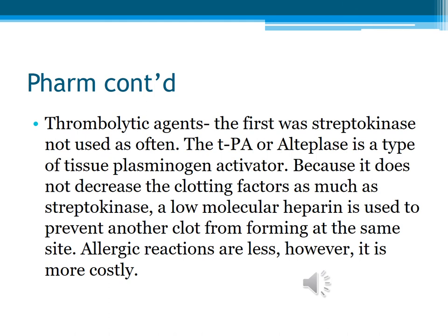Today we typically give TPA or alteplase as the plasminogen activator. Streptokinase is the original thrombolytic agent but is not used as much anymore because it doesn't do as good a job. Low molecular weight heparin — Lovenox — is easy to give, with fewer allergic reactions, but is more costly than TPA. It's important to know the contraindications for thrombolytic agents, as found in your text — things such as a recent GI bleed or recent brain bleed.